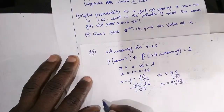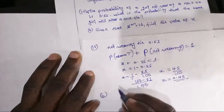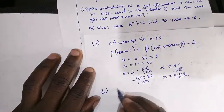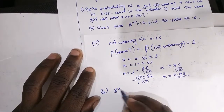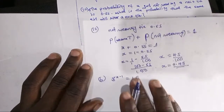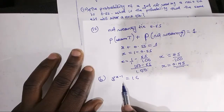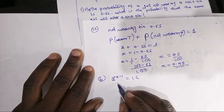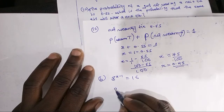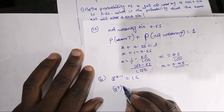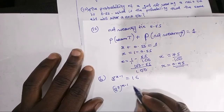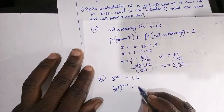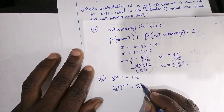For question 10b, we have the exponential equation: 8 to the power (x minus 1) equals 16. This equation has different bases, so we need to make the bases equal. We reduce 8 to 2 to the power 3, so it becomes (2^3)^(x minus 1) equals 16, and 16 is 2 to the power 4.